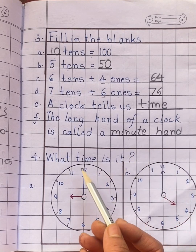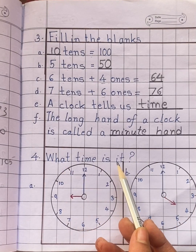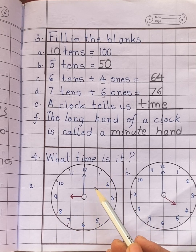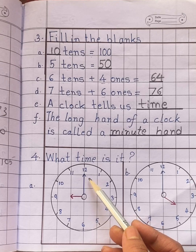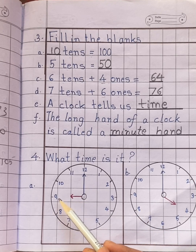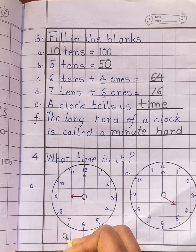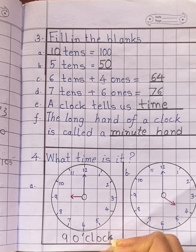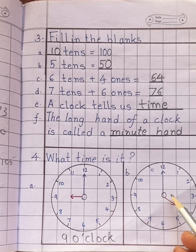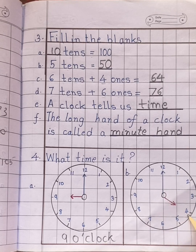Next question is what time is it? See the first clock. In this clock, the minute hand is at 12 and the hour hand is at 9. Time is 9 o'clock. Now in this clock, the minute hand is at 12 and the hour hand is at 4. Time is 4 o'clock.